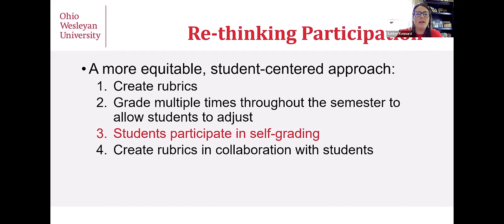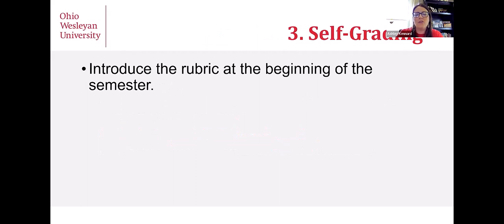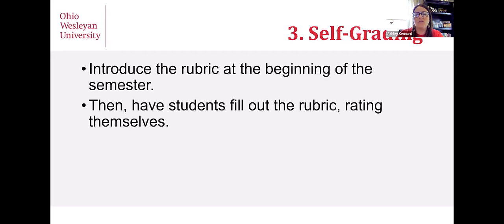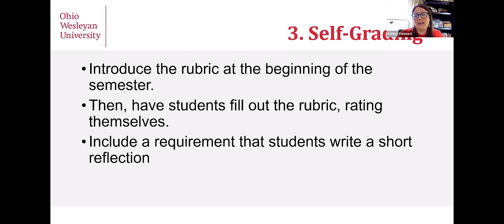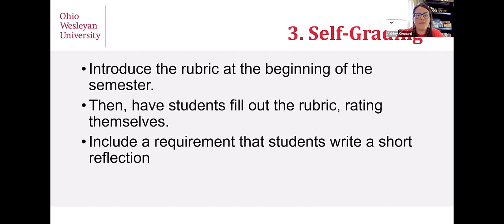The third thing is having students participate in self-grading. Introduce the rubric at the beginning of the semester so students have a sense of how they're going to be evaluated, then have them fill out that rubric and rate themselves — multiple times throughout the semester to keep it salient. Include a requirement that they also write a reflection, not just fill in numeric values, but asking students to reflect on why they think they've earned the grade they've indicated. Especially at the midpoint, ask them to also establish a plan: what are you hoping and wanting to do going forward? That provides an opportunity to reevaluate and look at some of those executive function aspects to this whole equation.